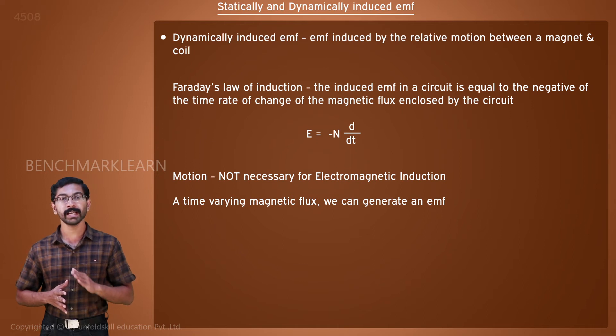DC currents can create only a constant magnetic flux. AC can produce time varying magnetic flux as AC currents themselves are time varying.